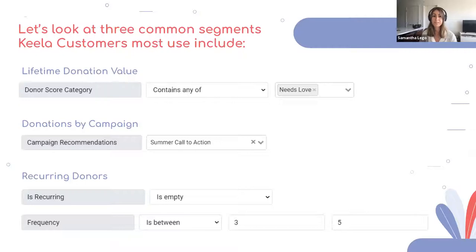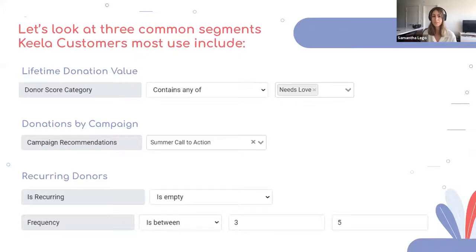Three common segments Keela customers use: first, lifetime donation value, which shows whether a donor is a major contributor or just starting out. Second, donations by campaign or impact area, which lets you analyze which specific area your organization's donors are contributing to. And the third, most popular, is the recurring donor campaign — this provides a list of donors who've given a couple of one-off gifts over a year or so and are believed to be a good fit to transition to regular giving.